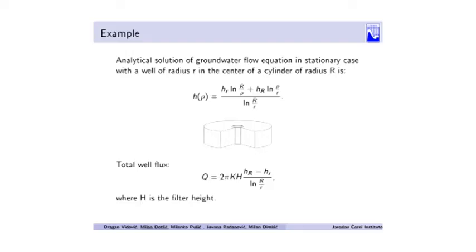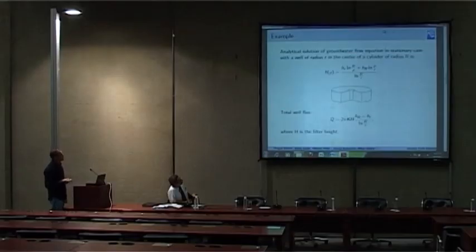An example: if a drain passes through the central axis of a cylindrical domain, we know the analytical solution of our problem in the stationary case. It is the well-known well function. Total well flux is obtained by differentiation of the well function.